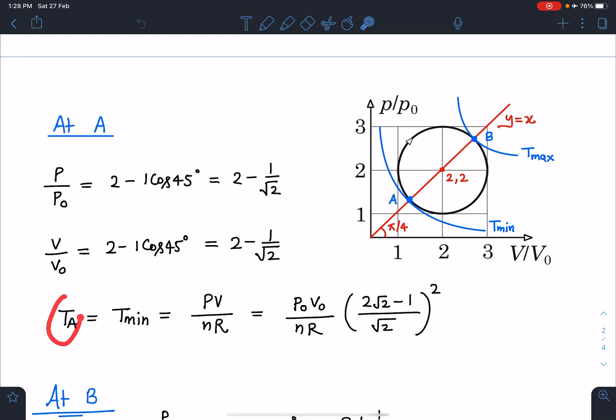Temperature at A, which is going to be T_min, is simply PV/(nR). If I simplify this further, P₀V₀/(nR) times (2√2-1)/√2 whole square.